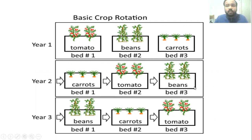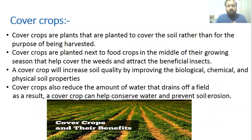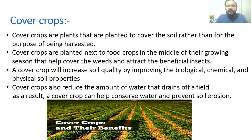Now, what are cover crops? When no food crops are growing on a piece of land, farmers grow cover crops so that the land does not remain uncultivated. If the land remains uncultivated, weeds will start to grow. Weeds are unwanted plants that suck the nutrients from the soil, making the soil deficient in nutrients. Cover crops are grown to prevent this situation.